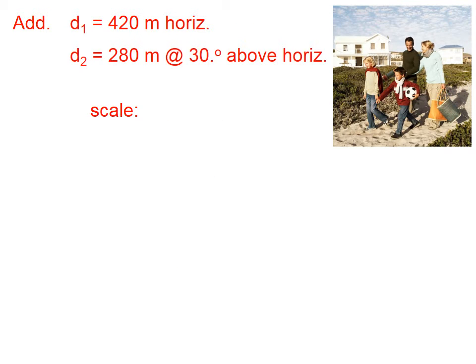Let's show you an example. Let's say we have two displacement vectors, 420 meters horizontally, and then walkers, this potential family, gets to a hill, and that hill is inclined at 30 degrees above the horizontal, and these people walk another 280 meters up the hill. What is their resultant displacement?